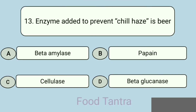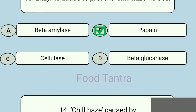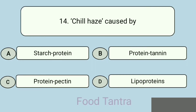Question 13: Enzyme added to prevent chill haze — Option A: Beta amylase. Option B: Papain. Option C: Cellulase. Option D: Beta glucanase. Correct answer: Option B. Question 14: Chill haze is caused by — Option A: Starch protein. Option B: Protein tannin. Option C: Protein pectin. Option D: Lipoproteins. Correct answer: Option B.